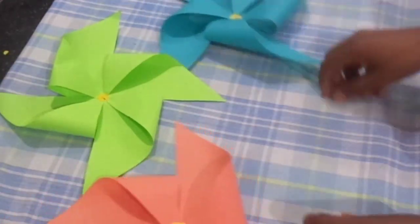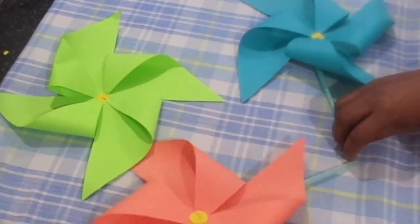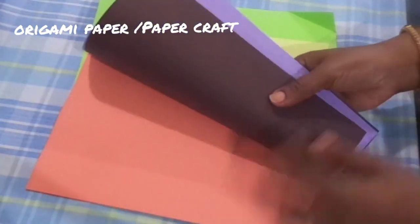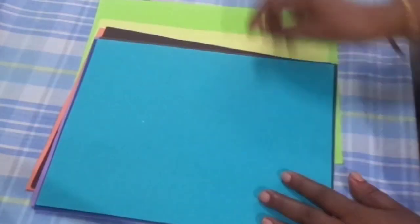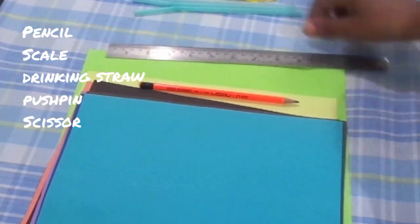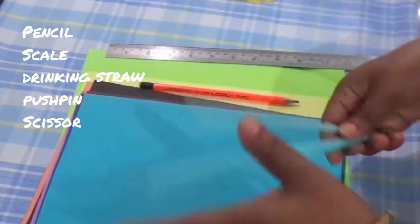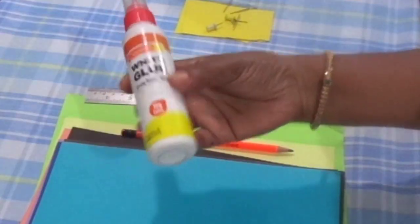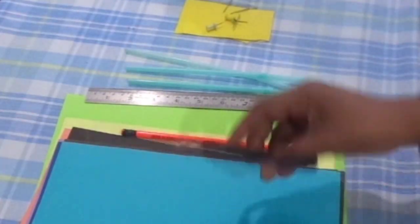So for this beautiful windmill we need craft paper or origami paper, any kind of paper, one pencil, scale, and these are straws which we use with water or juice, push pin, glue, and scissors.